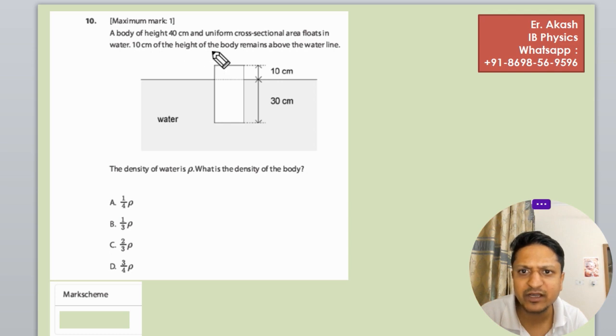10 cm of the height remains above the water line. Here is the figure: the total height is 40 cm, with 10 cm above water level and 30 cm below the water level.